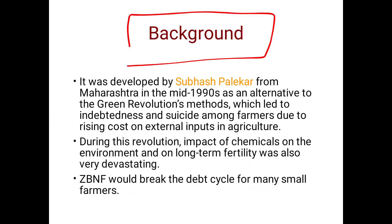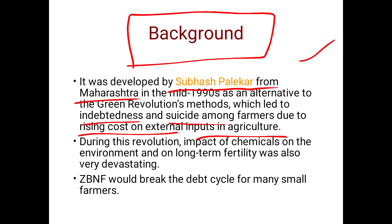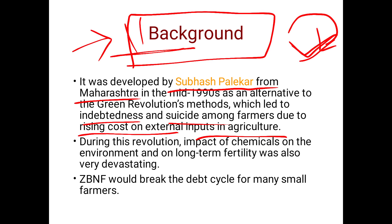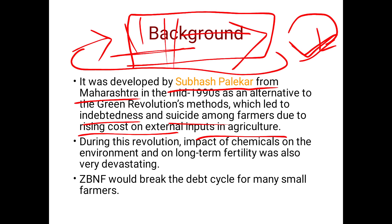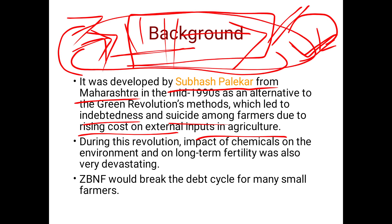ZBNF was made widely known by Subhash Palekar from Maharashtra in the mid-1990s as an alternative to Green Revolution methods, which led to indebtedness and suicide among farmers due to rising costs of external inputs. Palekar observed farmers trapped in a cycle of debt — taking loans for farm inputs, repaying only partially from harvests, and borrowing again each season.